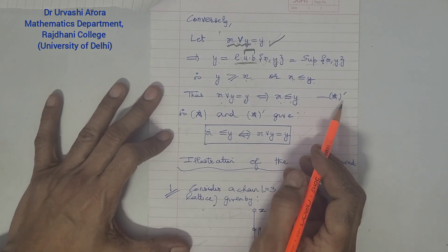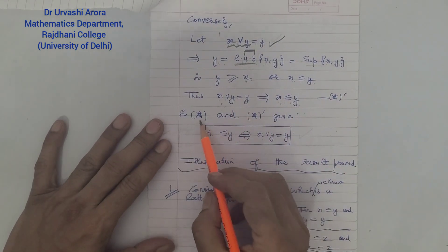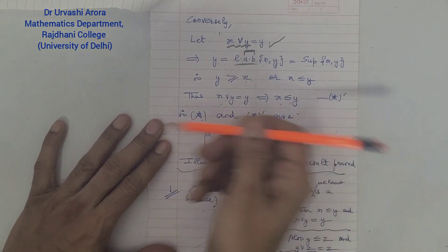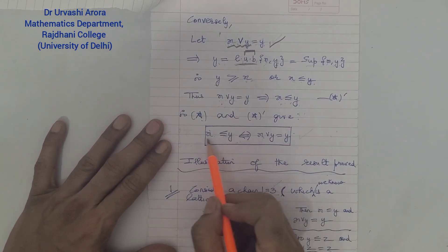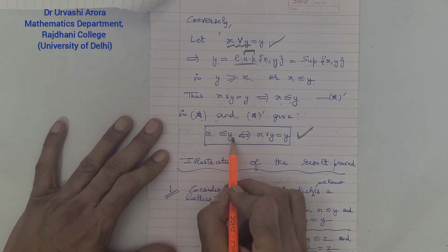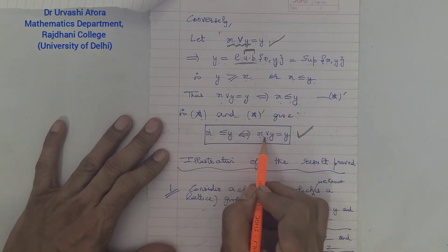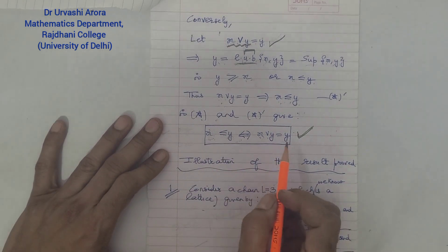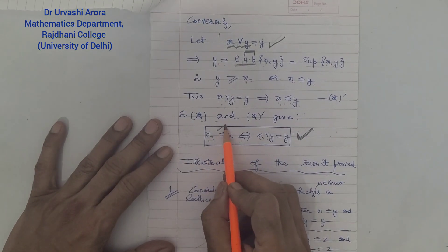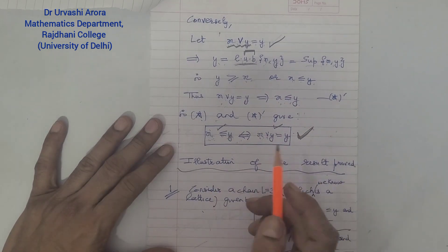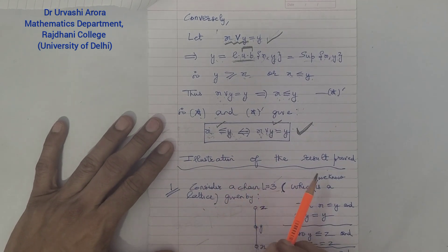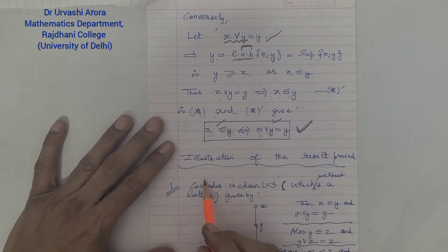I'm marking this as (★'). So (★) gives: x ≤ y implies x join y = y, and (★') gives: x join y = y implies x ≤ y. Together, (★) and (★') give both-way implications: x related to y implies the join is the element on the right, and if x join y = y then x is related to y. This completes the proof. If either statement holds the other holds too.